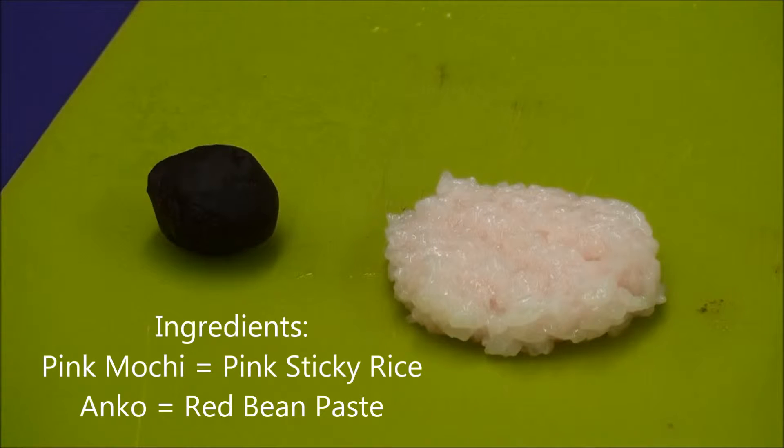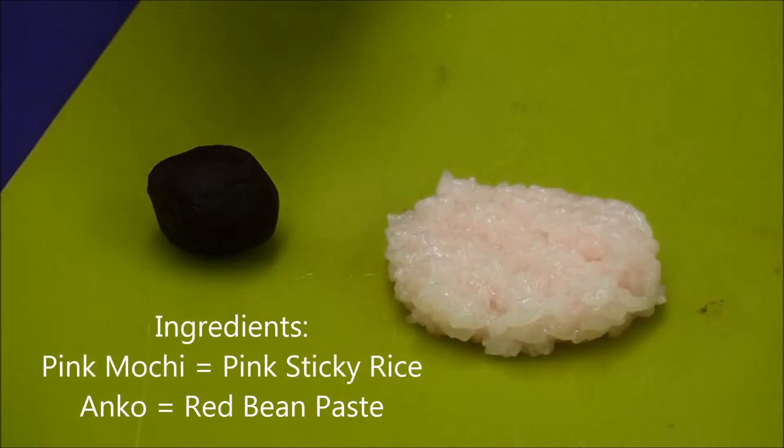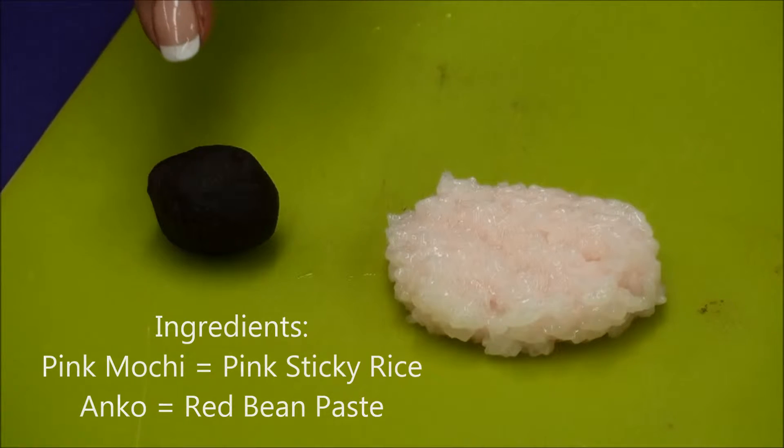There are two ingredients to prepare the sakura mochi. We have the pink mochi and we also have anko, which is a red bean paste.